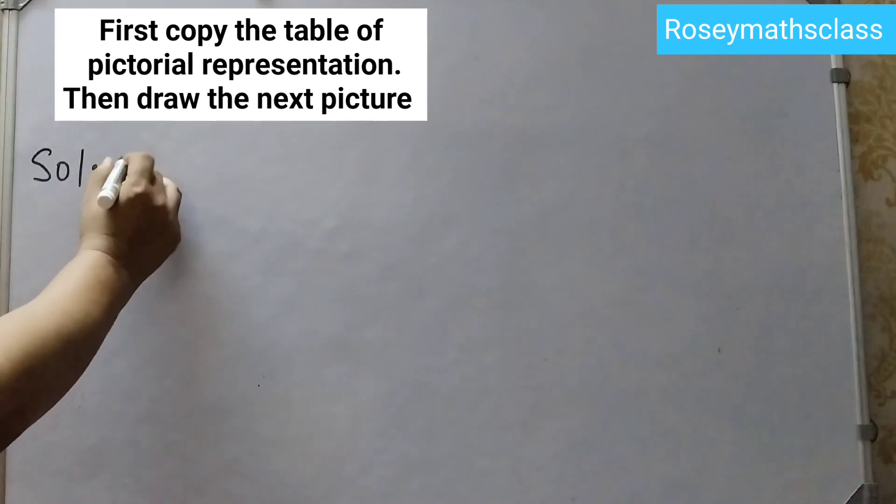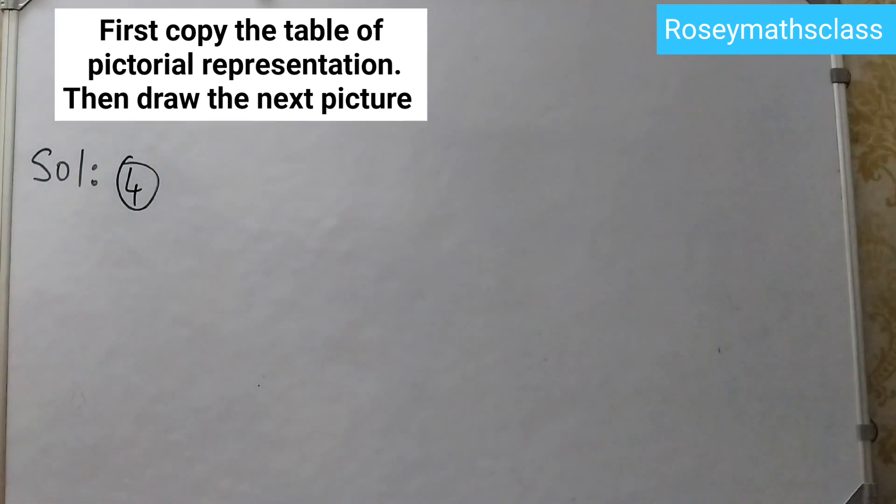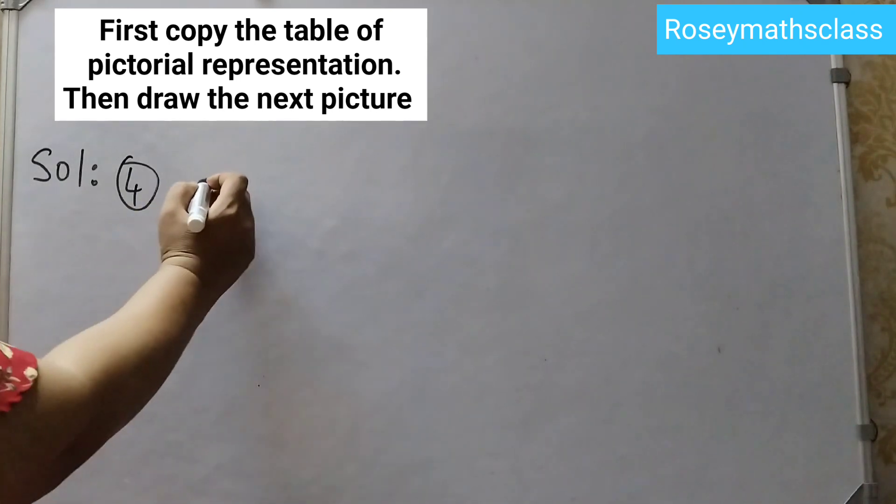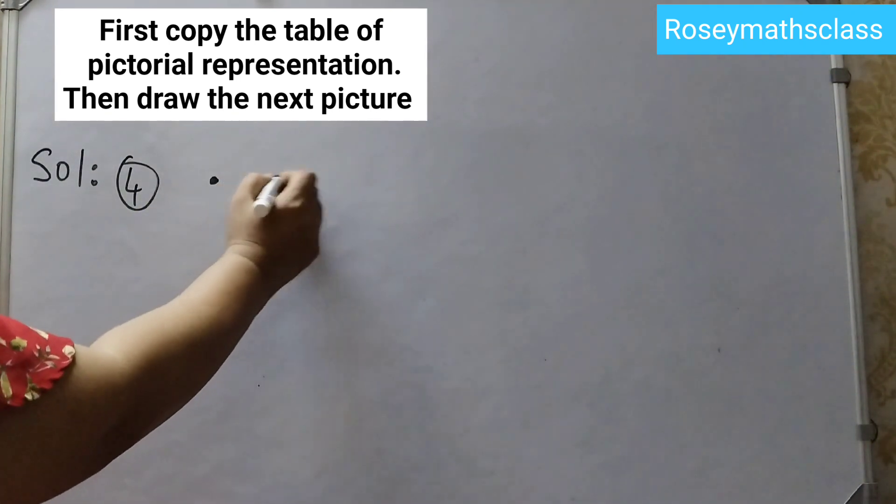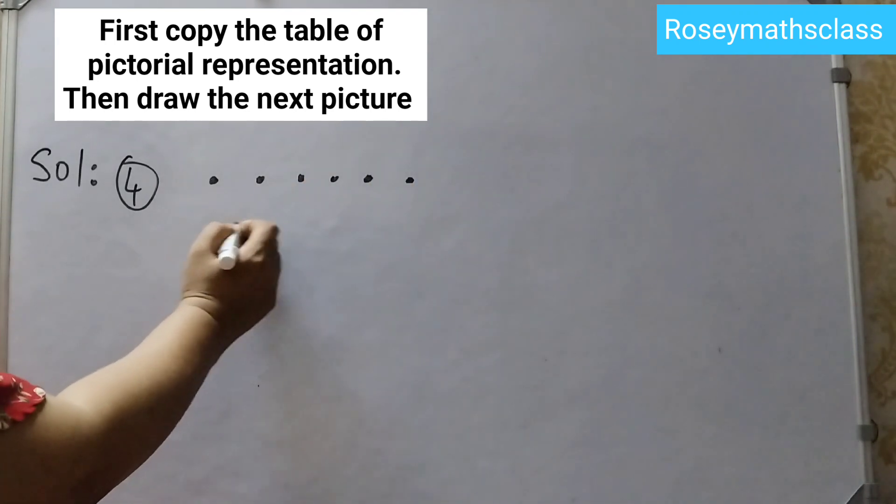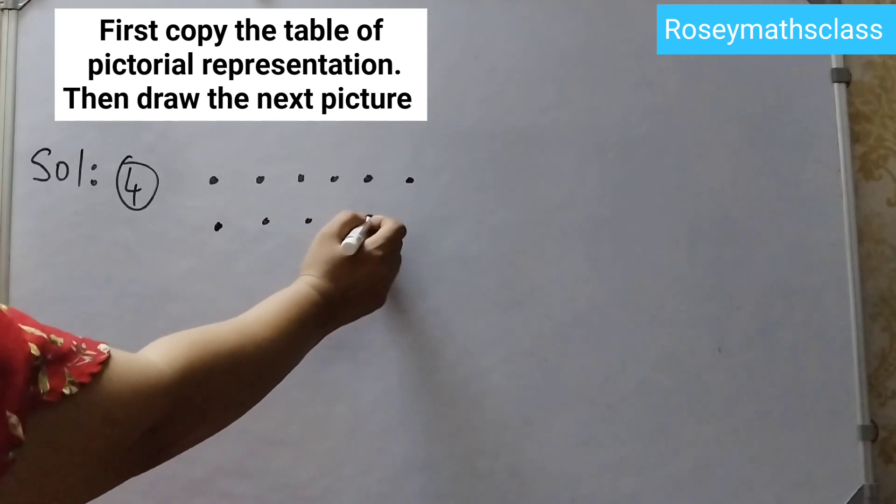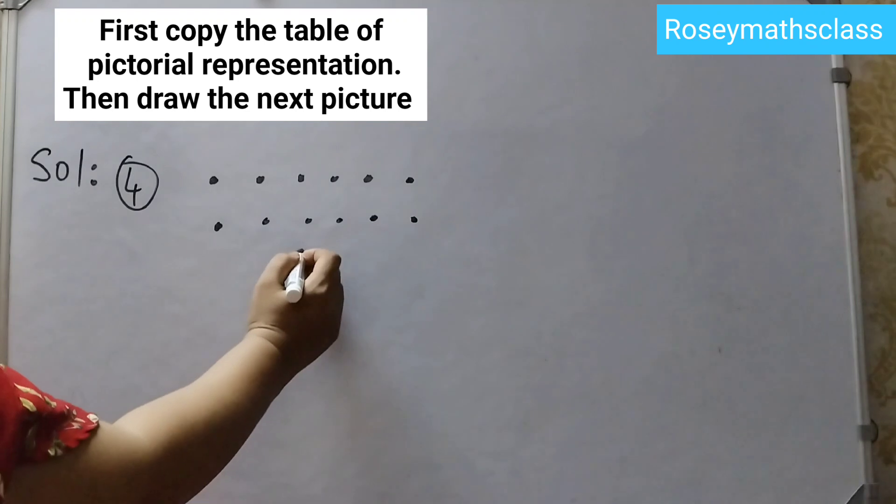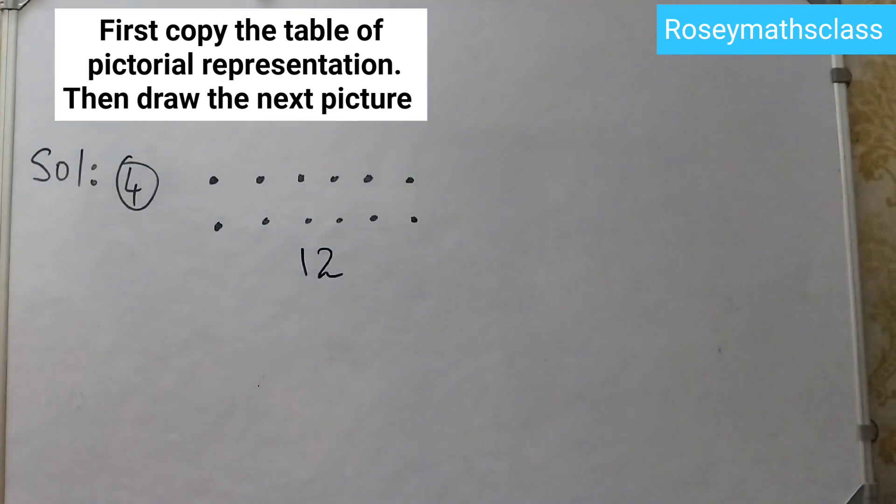So after 10, the next even number is 12, right. So we will draw 12 dots: 1, 2, 3, 4, 5, 6, 7, 8, 9, 10, 11, 12. 12 dots, that is the answer for the 4th one.